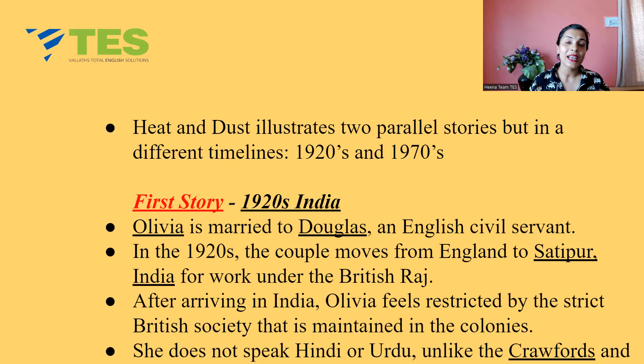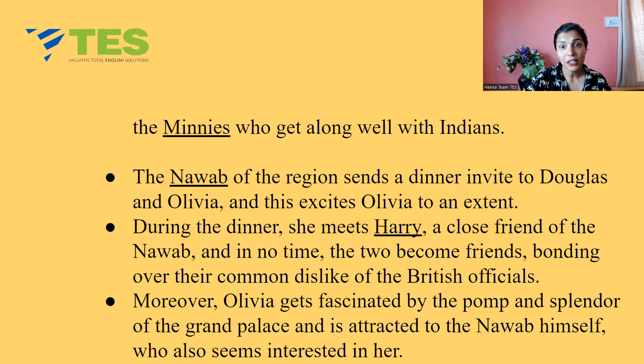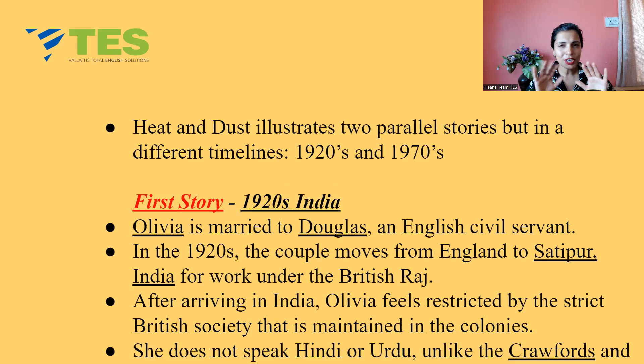Olivia is married to Douglas, an English civil servant. In the 1920s, the couple moves from England to Satipur, India for work under the British Raj. After arriving in India, Olivia feels restricted by the strict British society maintained in these colonies. She does not speak Hindi or Urdu, unlike the Crawfords and the Minis who get along well with Indians.